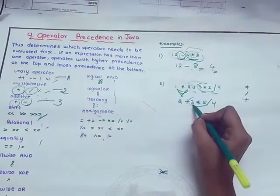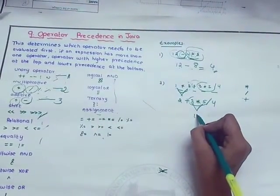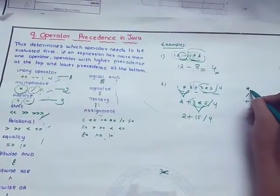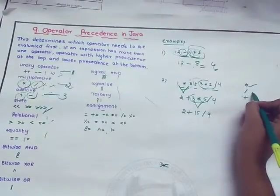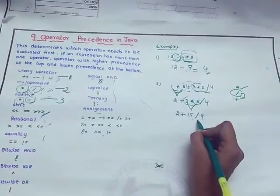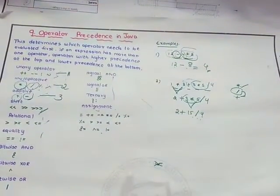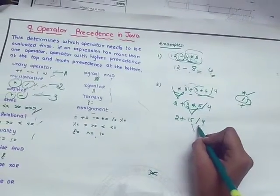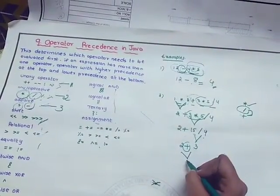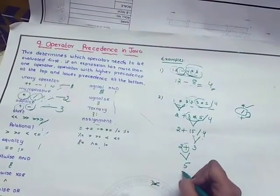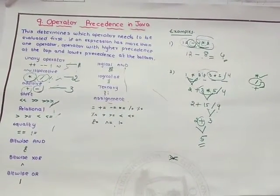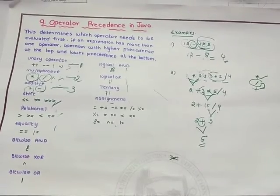So we have 2 plus 15 divided by 4. Now multiplication is completed. Comparing the remaining operators, division has higher priority, so 15 divided by 4 gives us 3. Then we have 2 plus 3, which is 5. So the final answer is 5. This is the way we calculate using operator priorities in Java. Thank you for watching my tutorial.